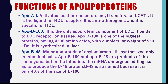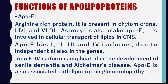Apoprotein B100 and apoprotein B48 are products of the same gene, but in the intestine the mRNA undergoes editing to produce the B48 protein. B48 is so named because it is only 48% of the size of B100. Apoprotein E is an arginine-rich protein present on chylomicrons, LDL and VLDL. Astrocytes make apoprotein E, which is involved in cellular transport of lipids in the central nervous system. Apoprotein E has isoforms E1, E2, E3 and E4; the E4 isoform is implicated in senile dementia and Alzheimer's disease. Apoprotein E is also associated with lipoprotein glomerulopathy.